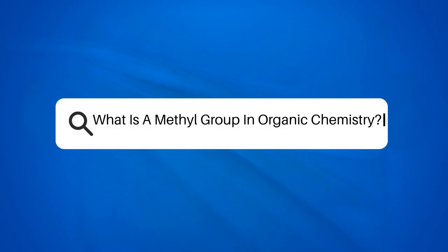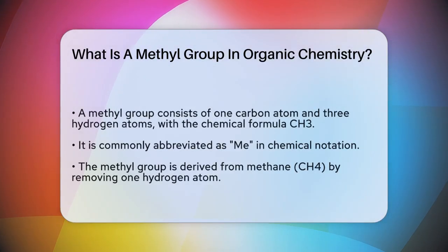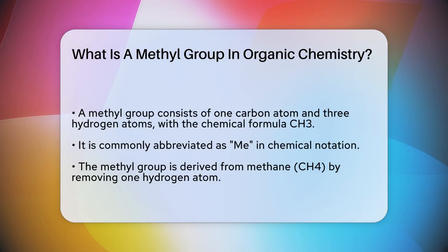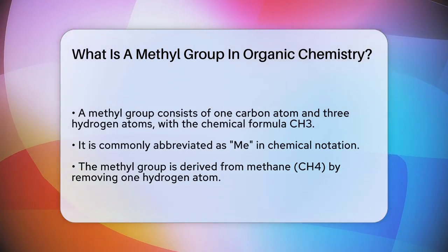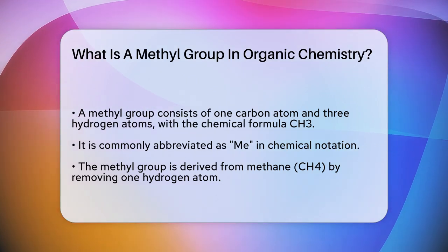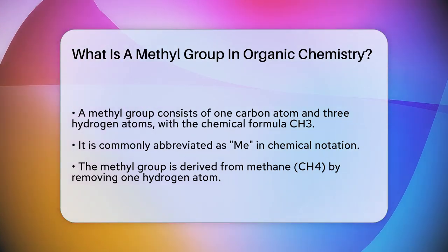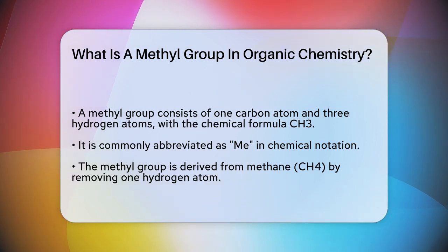What is a methyl group in organic chemistry? If you're curious about the building blocks of organic chemistry, you might have stumbled upon the term methyl group. So what exactly is a methyl group, and why is it so important? Let's start with the basics. A methyl group is a small molecule made up of one carbon atom surrounded by three hydrogen atoms. Its chemical formula is CH3.